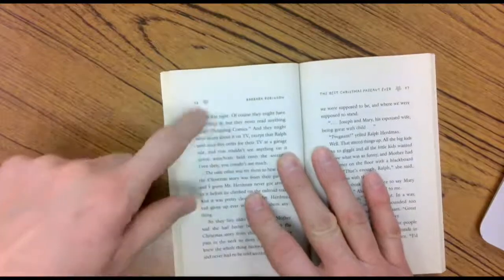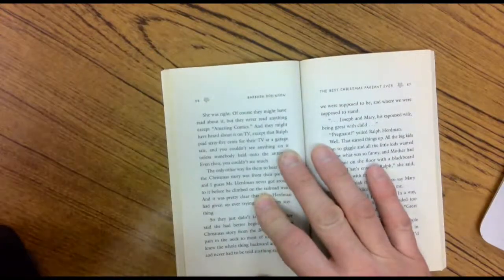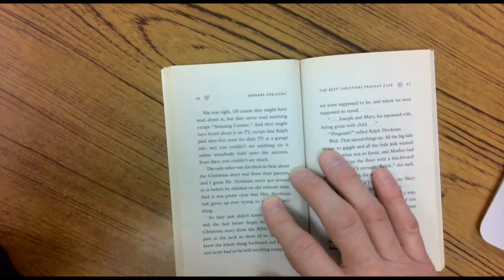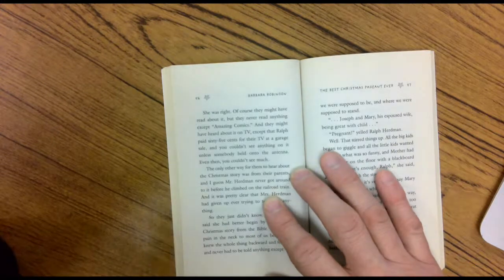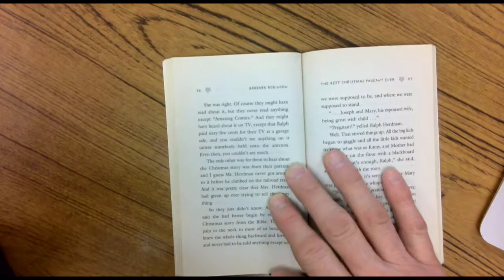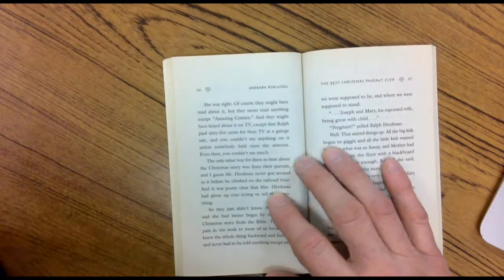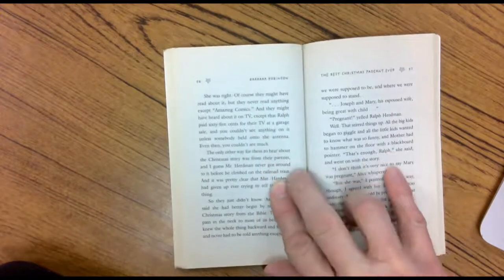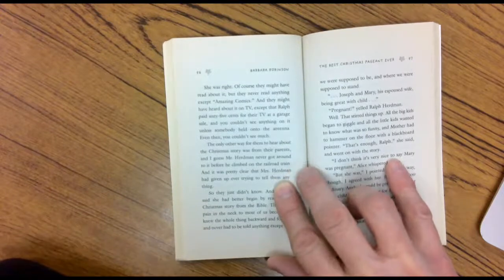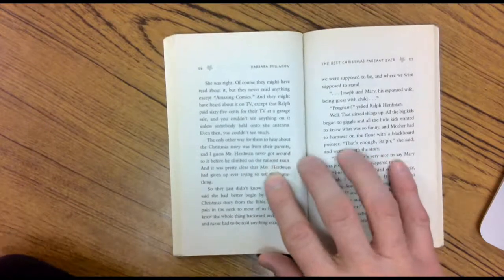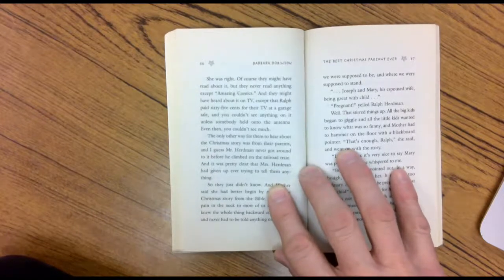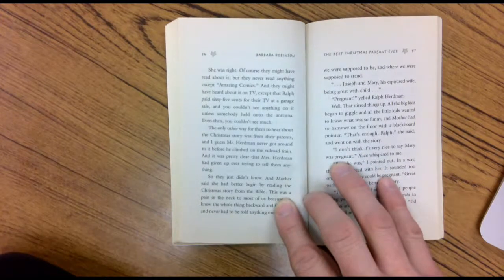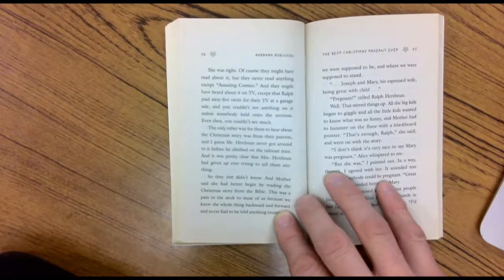And all you ever hear about Christmas in school is how to make ornaments out of aluminum foil. So how would they know the Christmas story? She was right. Of course, they might have read about it, but they never read anything except amazing comics. And they might have heard about it on TV except Ralph paid 65 cents for their TV at a garage sale and you couldn't see anything on it unless somebody held on the antenna. The only other way for them to hear about the Christmas story was from their parents. And I guess Mrs. Herman never got around to it. Mr. Herman never got around to it before he climbed onto the railroad train. And it was pretty clear that Mrs. Herman had given up even trying to tell them anything. So they just didn't know.